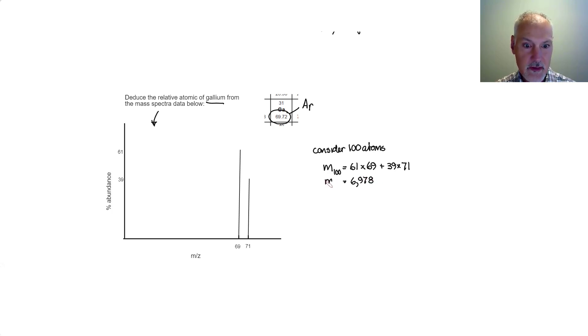Now, what we want to do is get the average mass of but a single atom. So I'm going to take that mass then and divide that mass by 100. And that then gives me the relative atomic mass of 69.78.